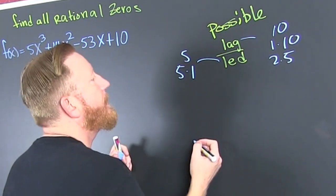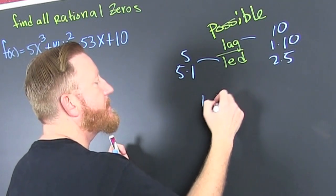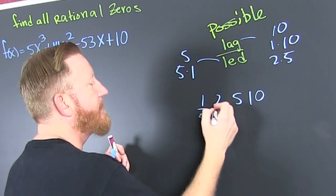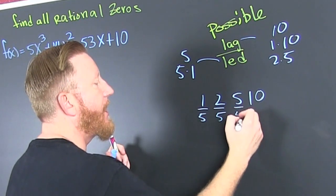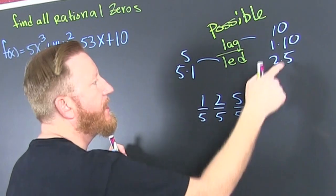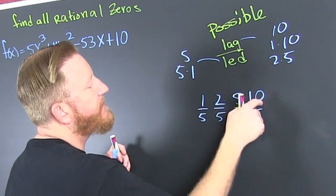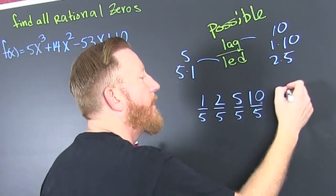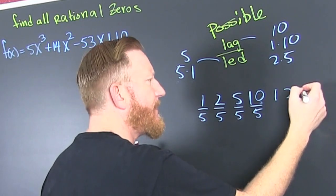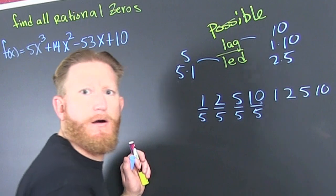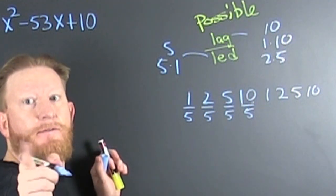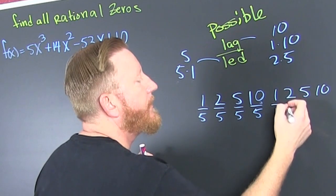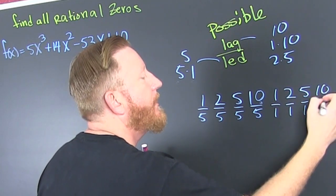Here we go. It's 1, 2, 5, 10, divided by 5, divided by 5, divided by 5, divided by 5. I take all my laggings — 1, 2, 5, and 10 — and I divide by my leadings, 5 and 1. So then that's 1, 2, 5, 10, all over 1.